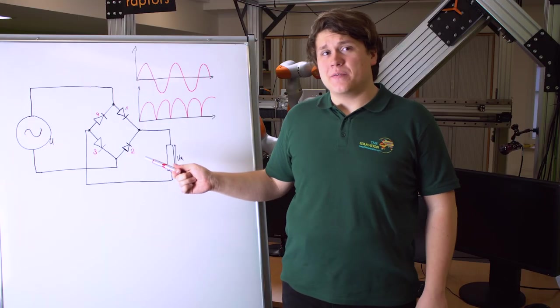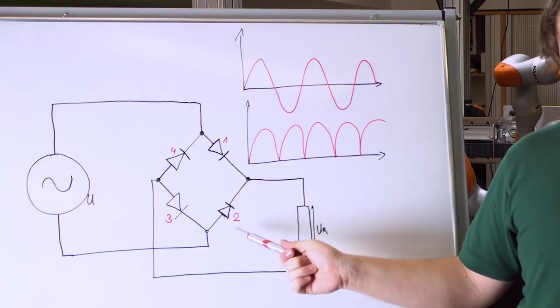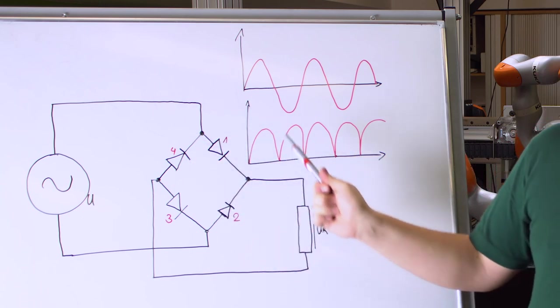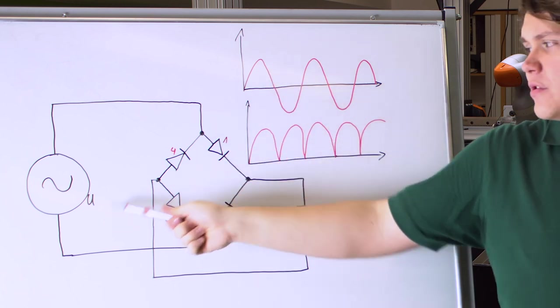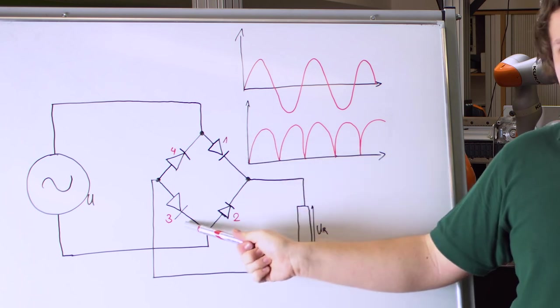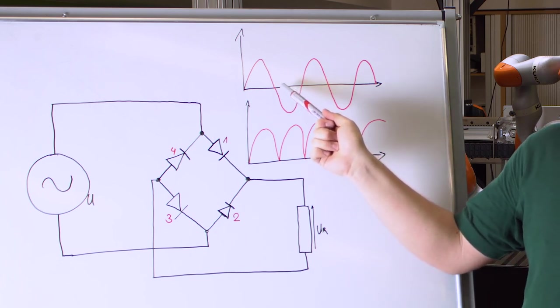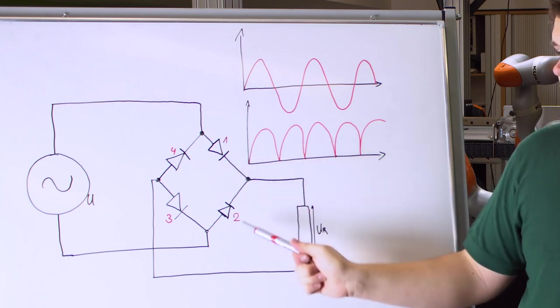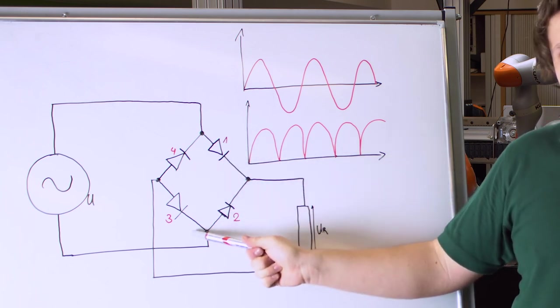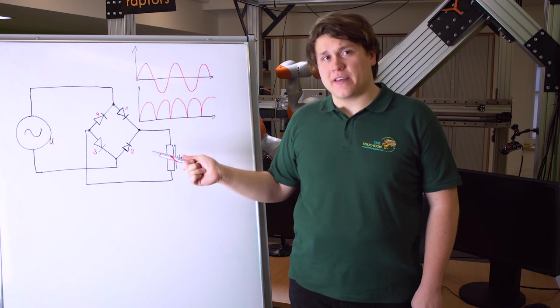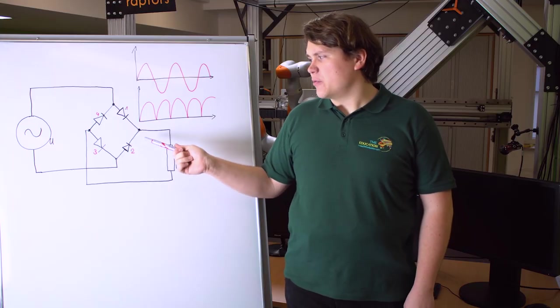Here we have a rectifier made of many diodes — it's called a Graetz bridge. When the voltage on the input is positive, diodes 1 and 3 conduct while 4 and 2 are turned off. When the input voltage is negative, diodes 4 and 2 turn on while 1 and 3 turn off. So regardless of whether positive or negative voltage is on the input, we always have positive voltage and positive current on the output. The voltage drop on such a bridge is around 1.4 up to 3 volts.